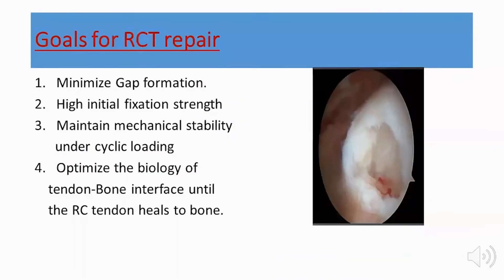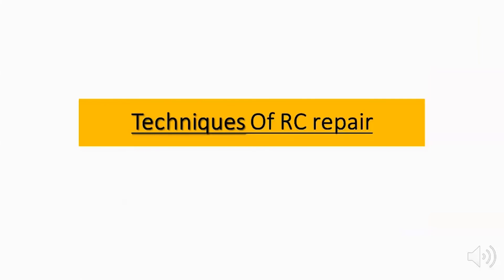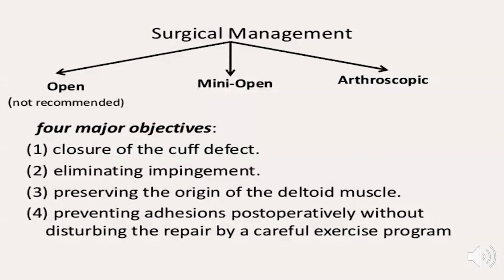The goals of rotator cuff repair are to minimize gap formation, achieve high initial fixation strength, maintain mechanical stability, and optimize the biology of tendon-to-bone healing. Various techniques have been described: the open technique (not recommended nowadays), the mini-open, and the arthroscopic approach, which are the more commonly used.